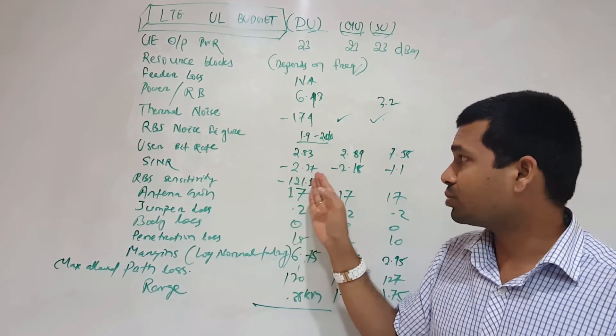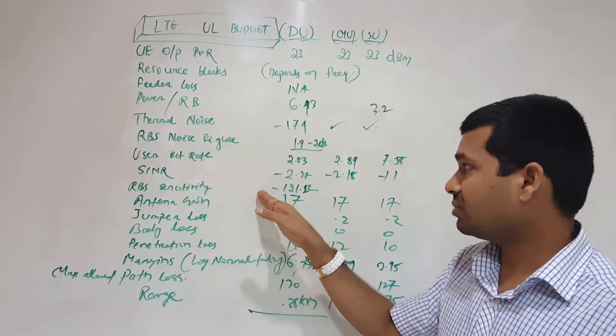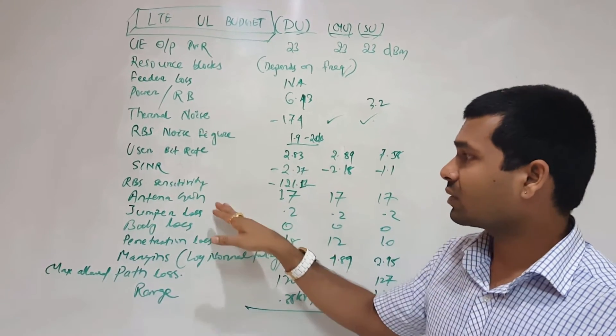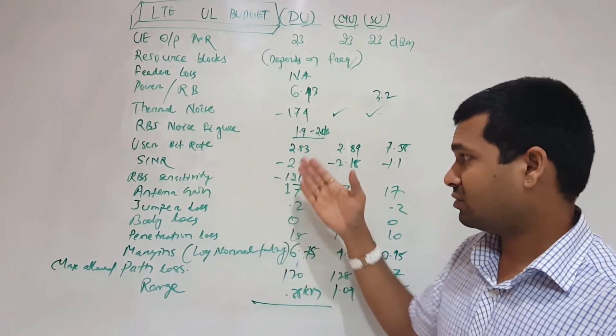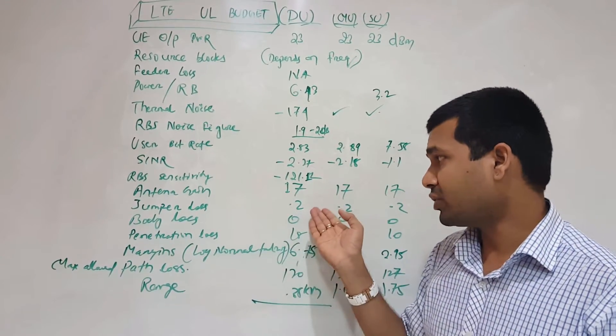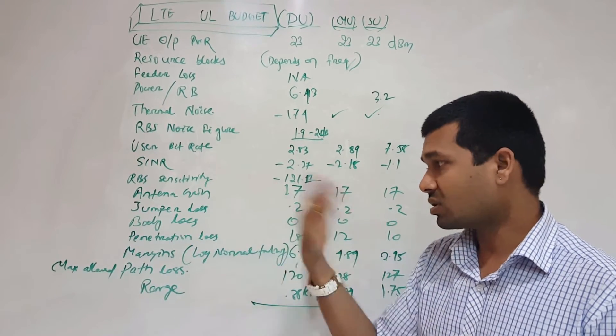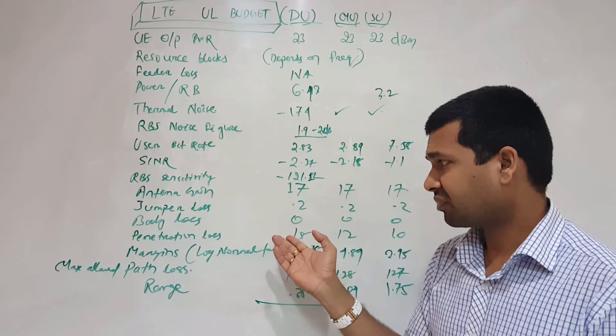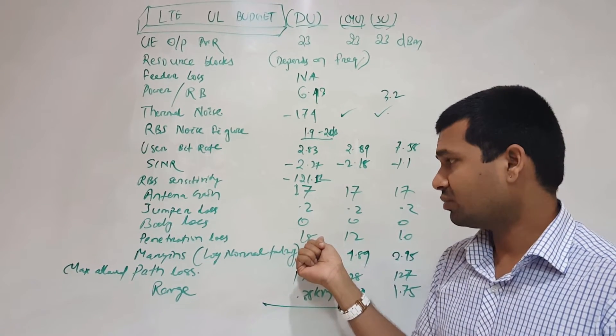Jumper loss 0.2, body loss 0. There is no body loss in the uplink side. Penetration losses 18 dB for dense urban because lots of high-rise buildings and lots of dense clutter, so the loss is very high.